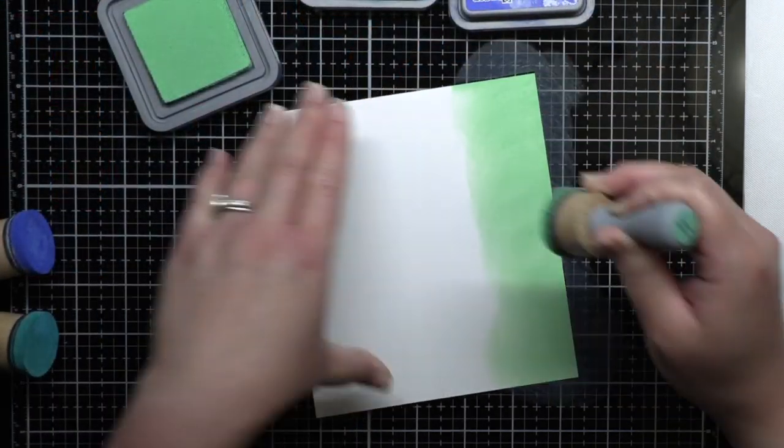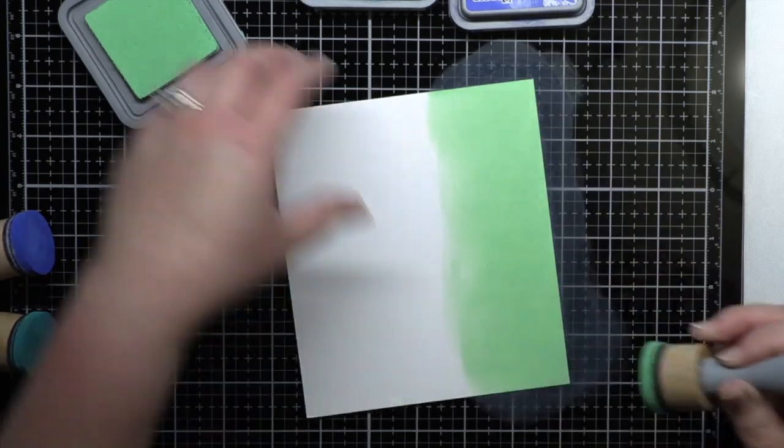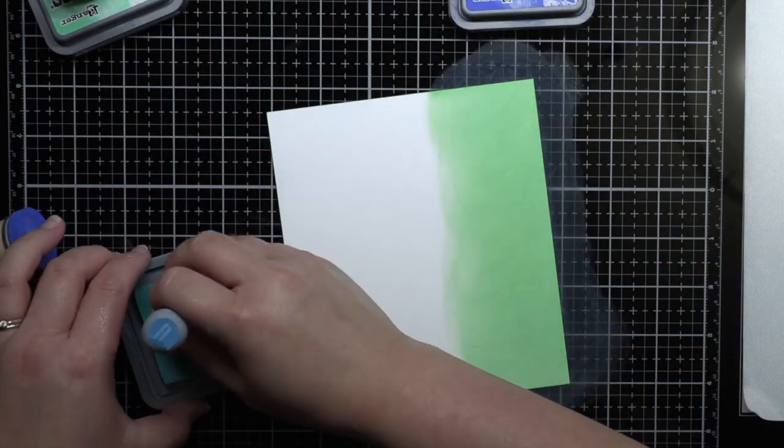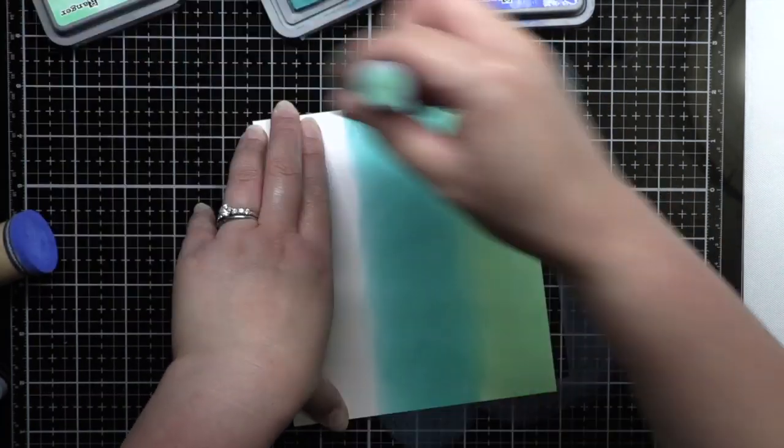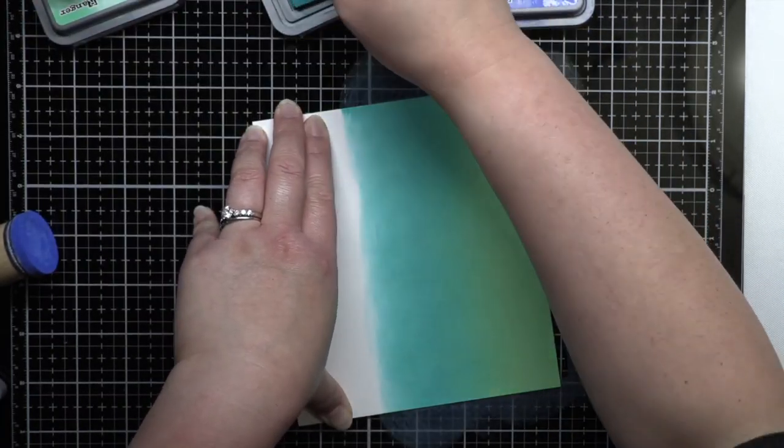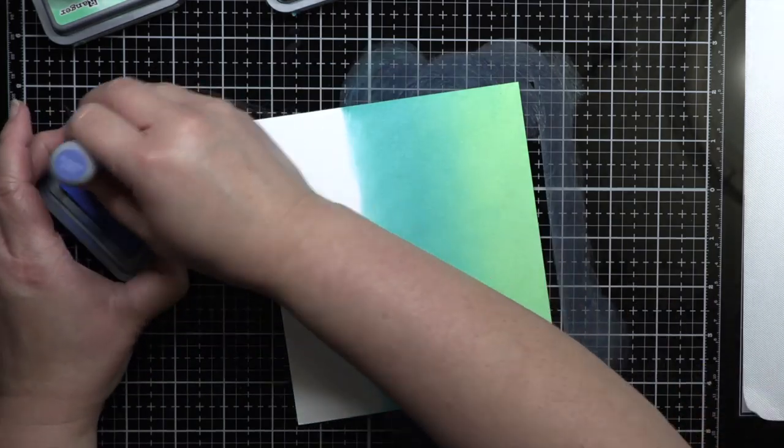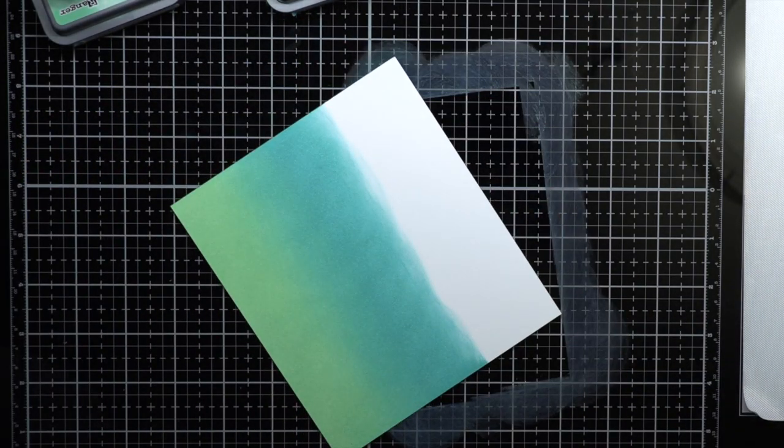Then it was time to create the rest of my card. I started by blending Cracked Pistachio, Peacock Feathers, and Blueprint Sketch Distress Oxide ink on a panel of white cardstock. Once it was dry, I splattered it with water a few times, and blotted off the excess before trimming it down to an A2 panel.